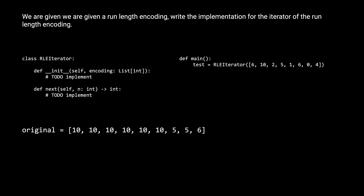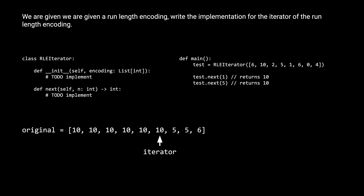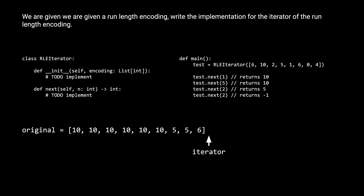This means our original sequence looks like this. Our iterator, before any calls are made, is sitting before the first element. If we call next with 1 as the parameter, it should move our iterator by 1 position, which would return that first 10. Next, if we call test.next(5), it's going to move our iterator by 5 positions, which makes it land on the last 10. Then if we call test.next(2), the iterator moves 2 positions, returning the 5. And finally, if we call test.next(2) again, it goes past the 6, and there are no more elements left, so we return negative 1.